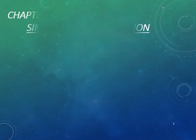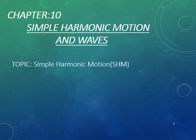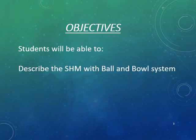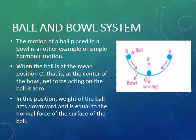Students, today we will discuss another example of simple harmonic motion and that is ball and bowl system. That is given on page number 4 of your textbook. At the end of the lecture, students, inshallah you will be able to describe the simple harmonic motion with ball and bowl system. The motion of a ball placed in a bowl is another example of simple harmonic motion.